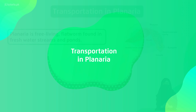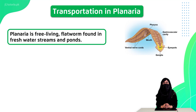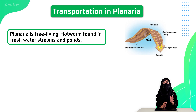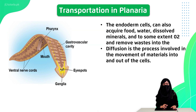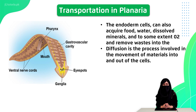Now let's talk about how transportation works in planaria. Planaria is a free-living organism, and some species are parasites. Its body is dorsally-ventrally compressed — it is a small flat shape. That's why in planaria, food is moved mostly through the diffusion process.